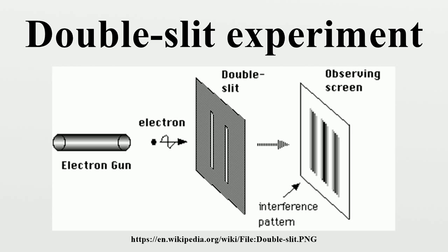In the basic version of this experiment, a coherent light source such as a laser beam illuminates a plate pierced by two parallel slits, and the light passing through the slits is observed on a screen behind the plate. The wave nature of light causes the light waves passing through the two slits to interfere, producing bright and dark bands on the screen — a result that would not be expected if light consisted of classical particles.